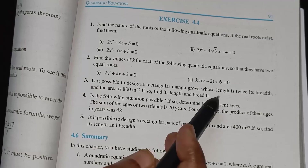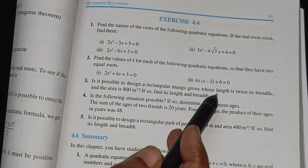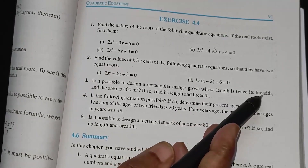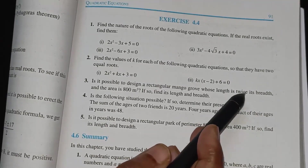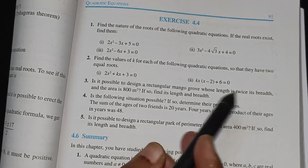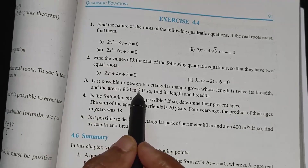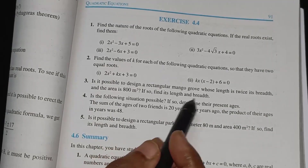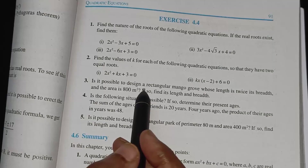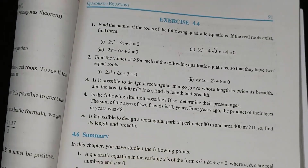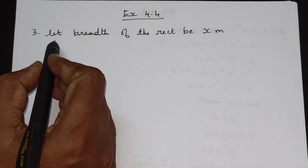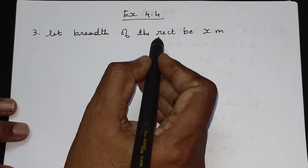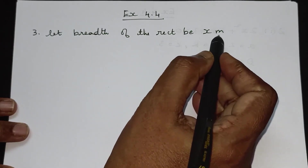In this sum, use length and breadth. Length is twice its breadth. Let x be the breadth, then length twice its breadth is 2x. The area is 800m².